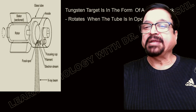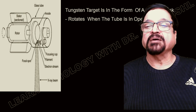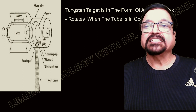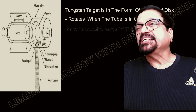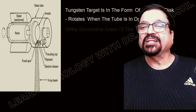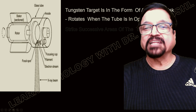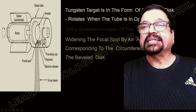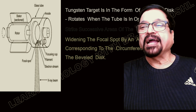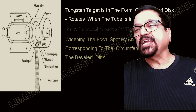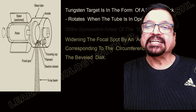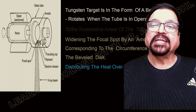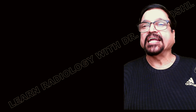There are different videos made for the filament, the focusing cup, and the electron stream — how it is governed and streamlined. The tungsten target is a beveled disc so different areas are getting exposed. Widening of the focal spot corresponds to the circumference of the beveled disc, and therefore heat is distributed over an extended area.